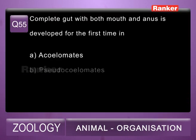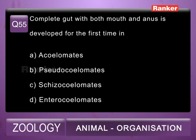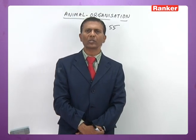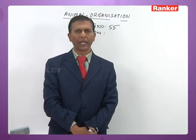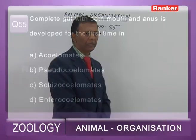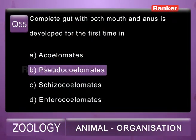Question 55: complete gut with both mouth and anus developed for the first time in A) acoelomates, B) pseudocoelomates, C) schizocoelomates, D) enterocoelomates. A complete gut with both mouth and anus is noticed for the first time in pseudocoelomates, that is in nemathelminthes. So the 55th question correct answer is B, pseudocoelomates.